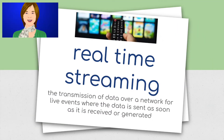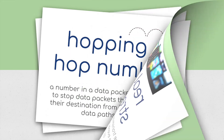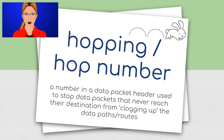Real time streaming: the transmission of data over a network for live events where the data is sent as soon as it is received or generated. Hopping or hop number: a number in a data packet header used to stop data packets that never reach their destination from clogging up the data paths or routes.